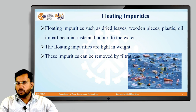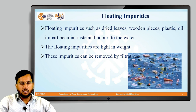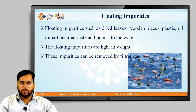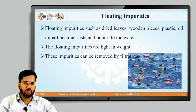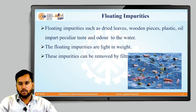Floating impurities are impurities which float on water because they are light in weight. Floating impurities include dried leaves, wooden pieces, plastics, and oil molecules, which impart a peculiar taste and odour to water. Generally, floating impurities can be removed by filtration.